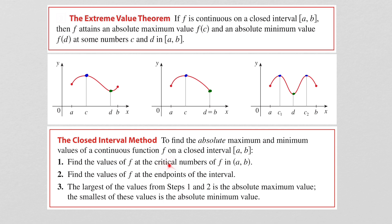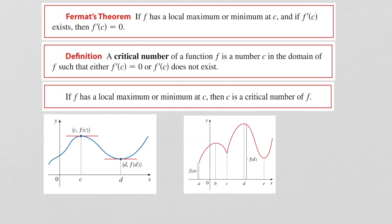Now let's talk about critical numbers. First, let's state Fermat's theorem. If f has a local maximum or minimum at the value c, and if f prime of c exists, then f prime of c must be zero. So this says if you have a local maximum or minimum and the function is differentiable at that point, then the slope of the tangent line must be zero. However, we know from previous diagrams that when the derivative is zero is not the only time you could have a maximum or a minimum.